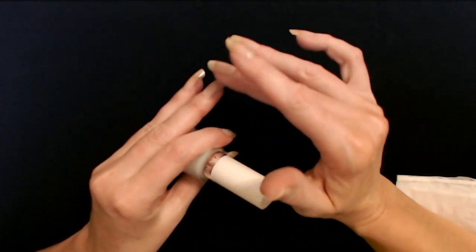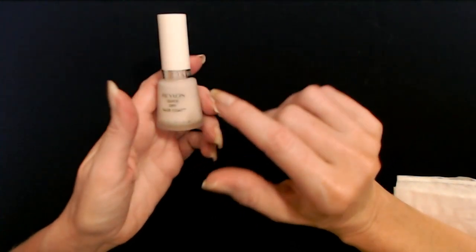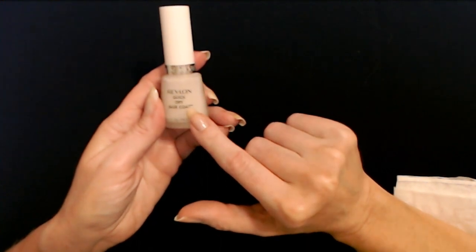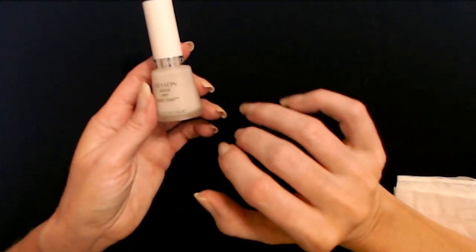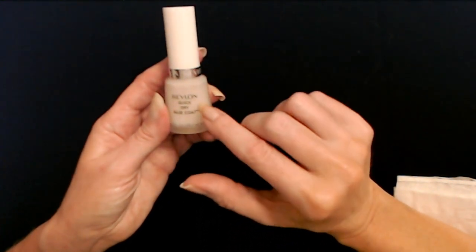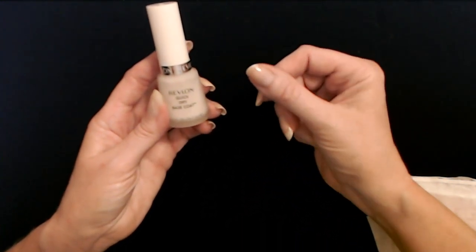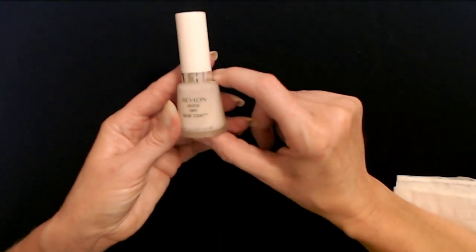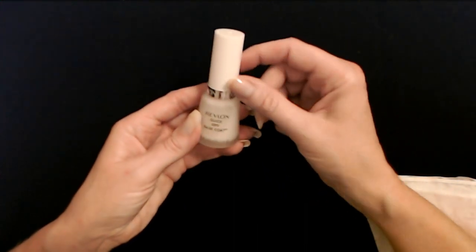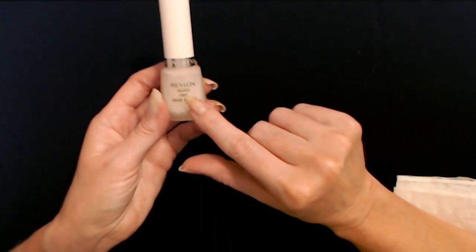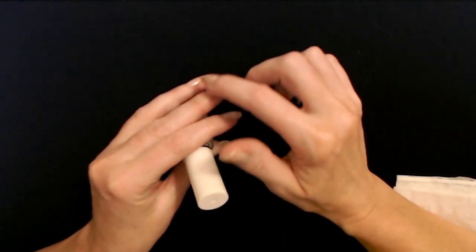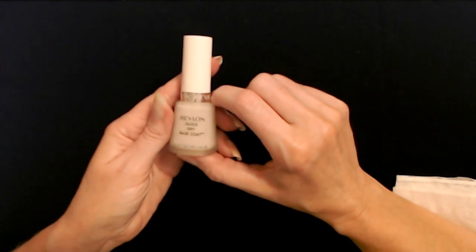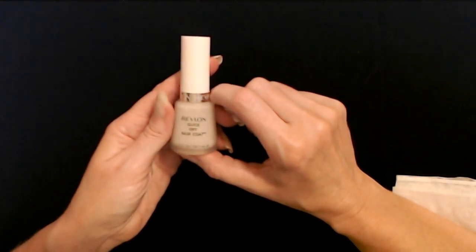You apply a top coat to keep it from chipping, but I've found that if you also apply this base coat, it helps keep your nail polish from chipping and makes it last longer, and it dries really fast. Another good thing is it keeps the color of the nail polish from transferring to your nails and staining your nails. It really provides a nice barrier.